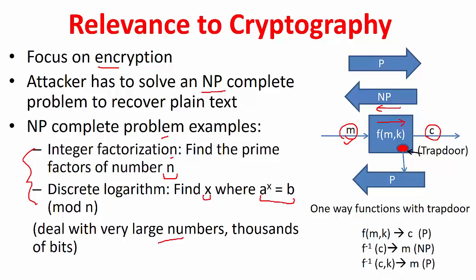The receiver should be able to decrypt, so these functions always have a trapdoor. With the trapdoor, recovering the plaintext from the ciphertext becomes polynomial. So: computing f(m, k) to get ciphertext is polynomial; inverting without the key is non-polynomial; but inverting with the key is polynomial. That is what we call the trapdoor.